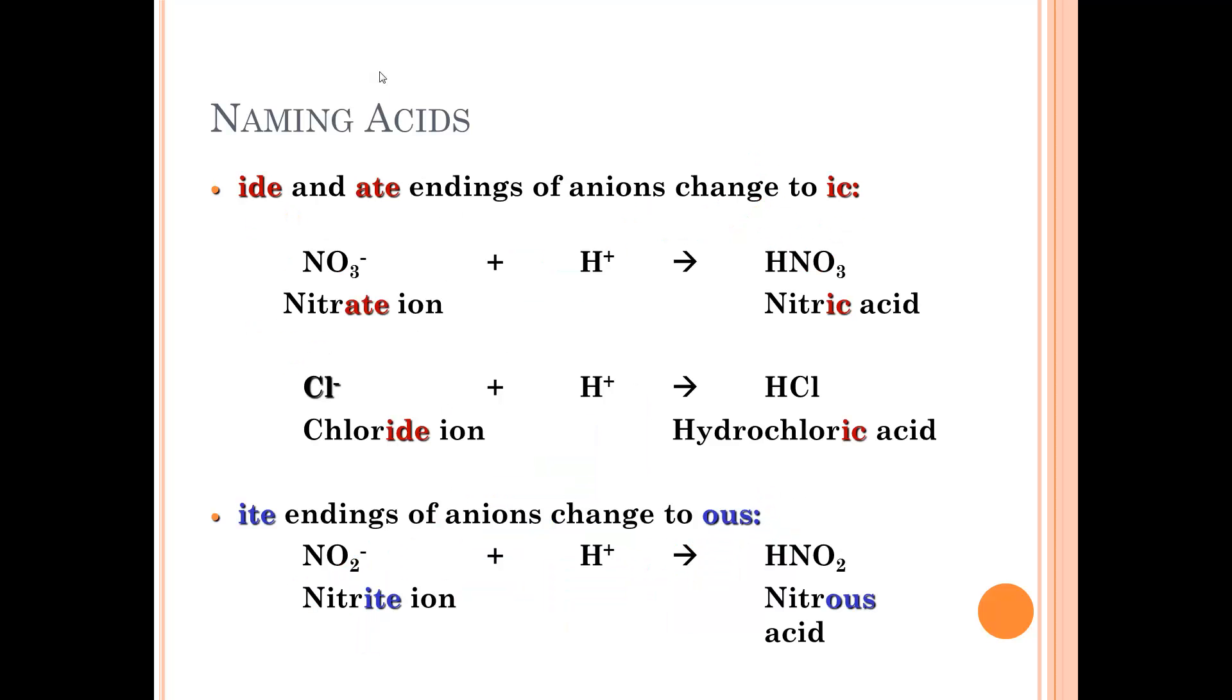If it's a polyatomic ion, there's a couple simple rules. If it ends in -ate, that -ate turns to -ic. You can remember that by 'ick, I ate an acid.' It's a really silly phrase, but it could work if it helps you remember. Ick, I ate an acid. So -ick turns, it changes from -ate to -ic. So nitrate becomes nitric.